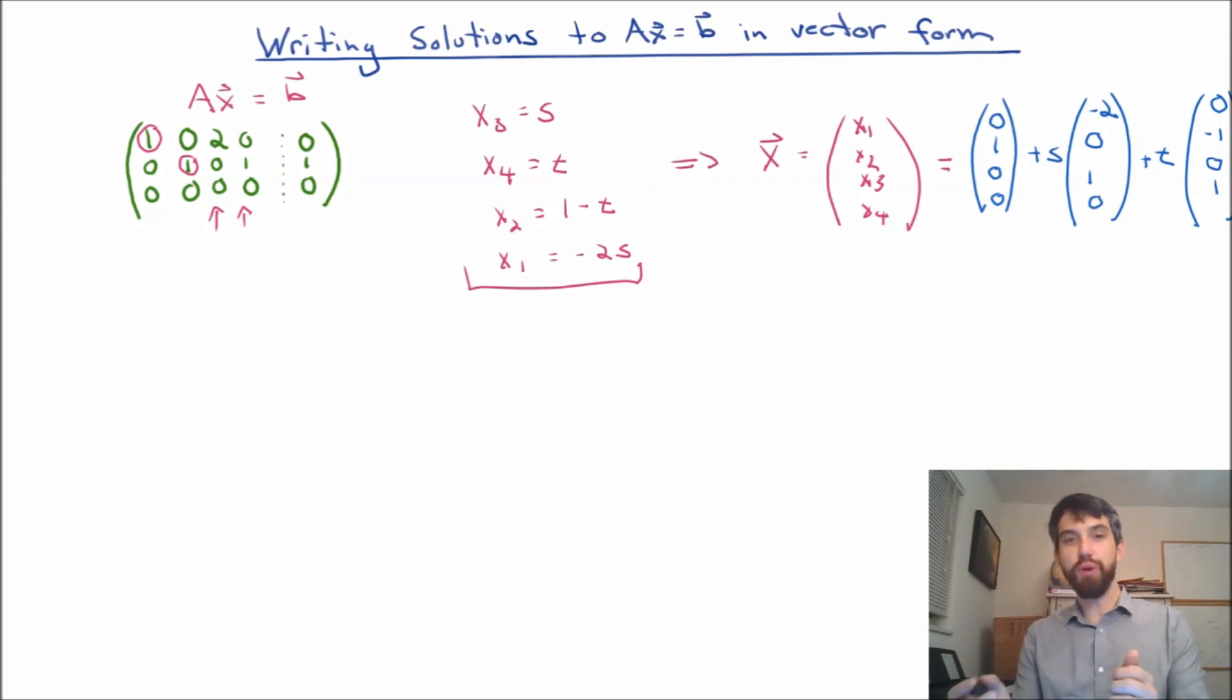So this I'm going to refer to as my vector form of a solution, where I'm taking the vector x, and I am writing it as this linear combination of different vectors, a constant vector, and then a bunch of vectors that have the parameter multiplied out the front as a constant. And then if I want to think about what solutions are to this, well, you always start at the constant.